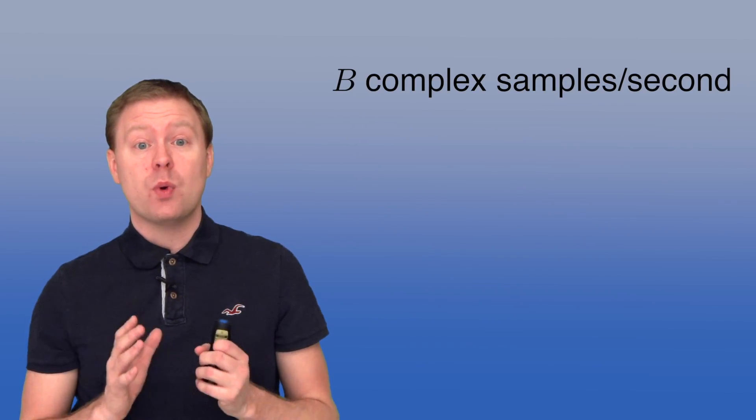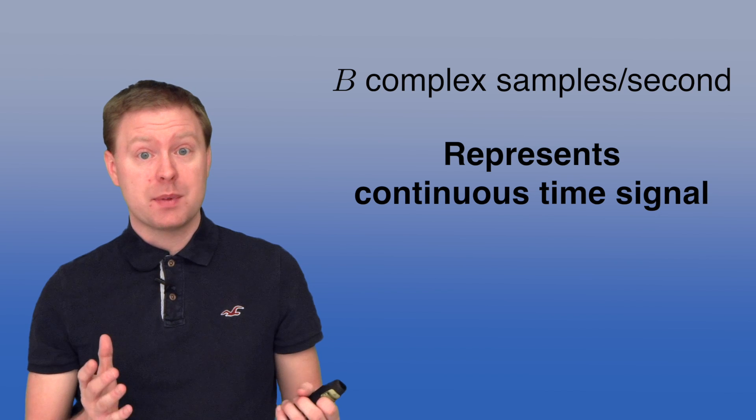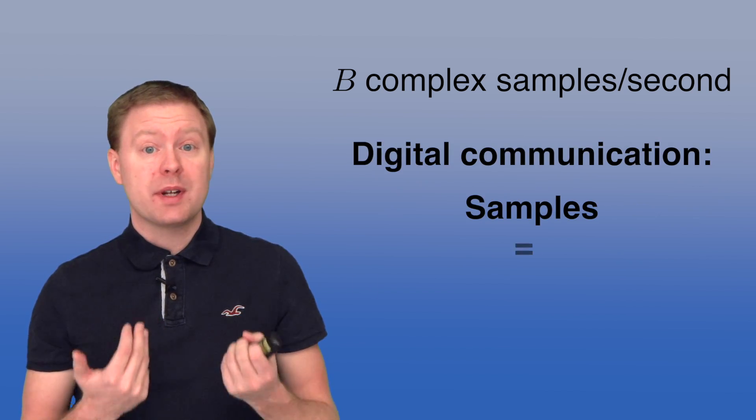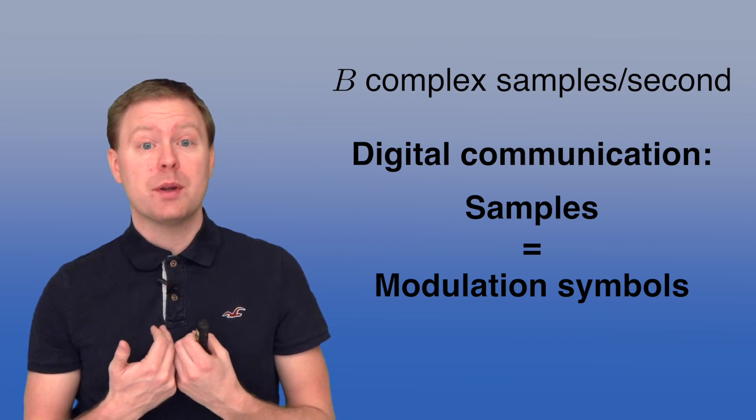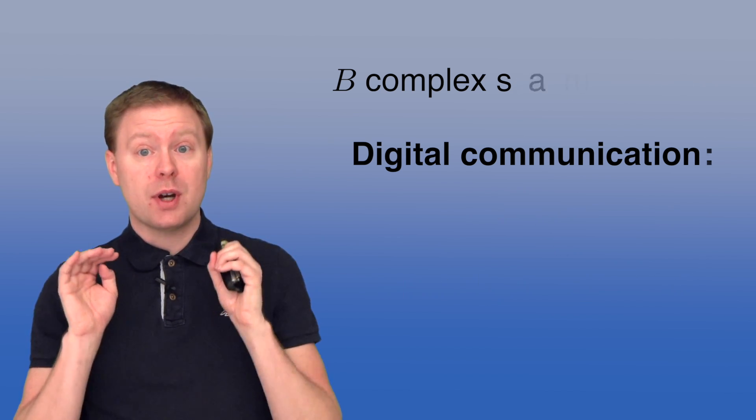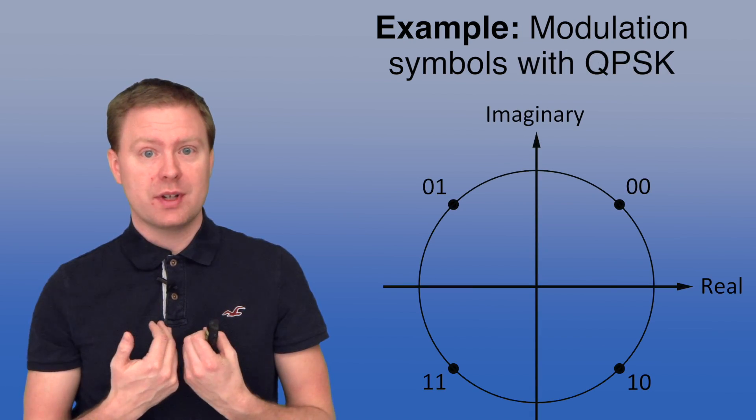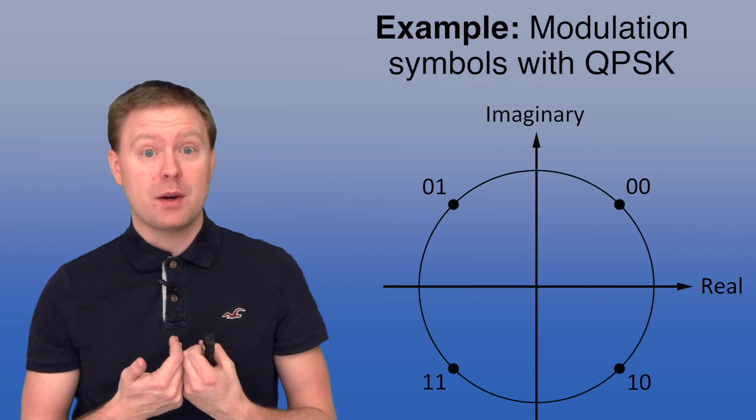Traditionally these samples is a way of representing a continuous time signal perfectly in discrete time. However, in digital communication we do the opposite. These samples is what we call the modulation symbols. This is where we put our information and then based on that we are generating a continuous time signal with the bandwidth that we are allowed to use.